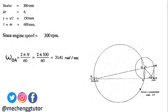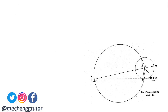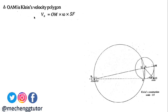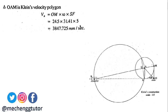Moving ahead, having drawn the Klein's construction, we get the triangle as the velocity polygon and the quadrilateral OAQN as the acceleration polygon. To find the velocity of the slider, considering triangle OAM, velocity Vb equals OM × ω × scale factor. Measuring OM gives 24.5 mm; multiplied by scale factor 5 and ω = 31.41, we get the velocity of the slider as 3847.75 mm/s.